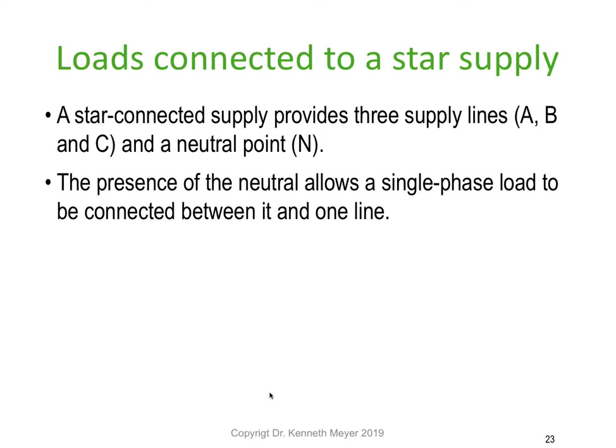A star-connected supply provides three lines — A-phase, B-phase, C-phase — and a neutral point, or what we sometimes call the star point. In the presence of a neutral, a single-phase load is connected between the neutral and the line. When we have a neutral, any phase to the neutral or star point is a single-phase load.